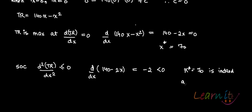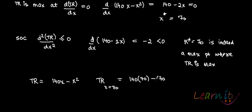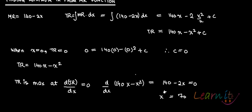Since x star equals 70 is a maximum point, we can now find the maximum total revenue by substituting into TR = 140x minus x squared. TR at x equals 70 is 140 times 70 minus 70 squared, which equals 4900. So when you produce 70 units of the product, total revenue is maximum at 4900.